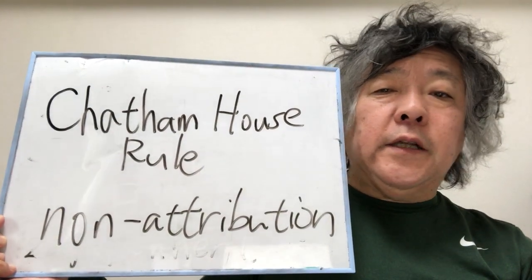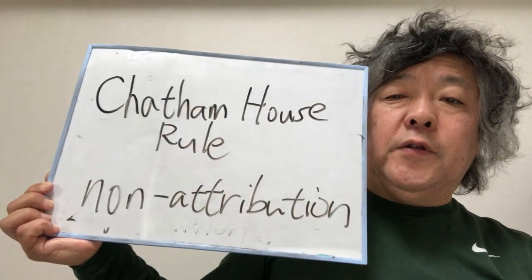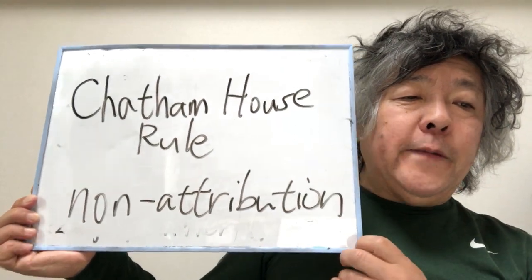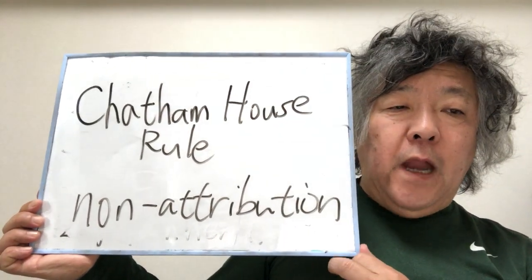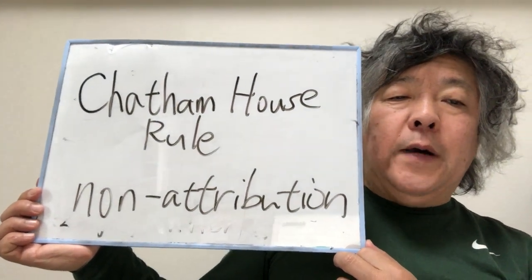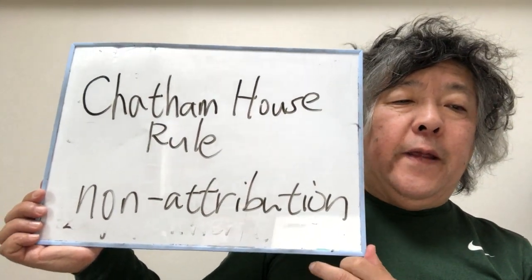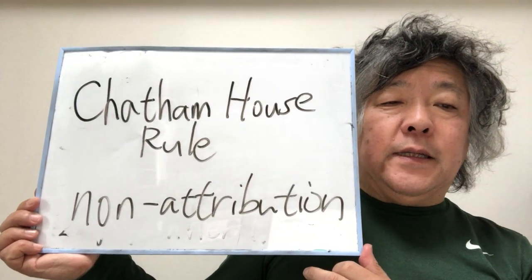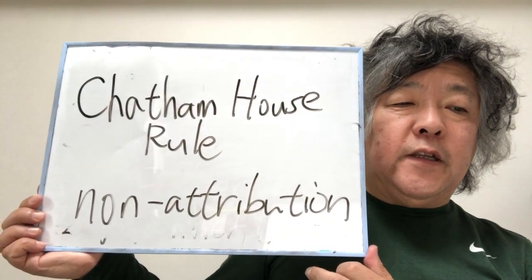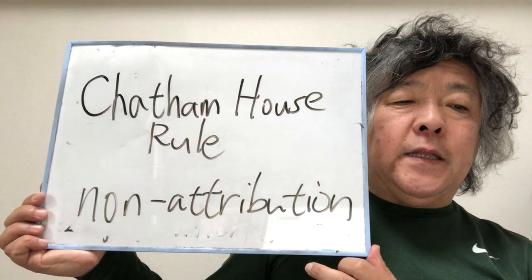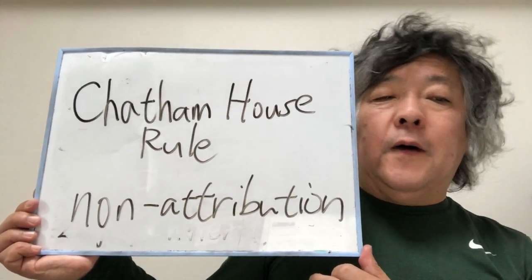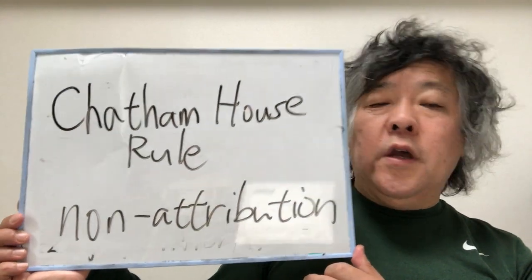The Chatham House rule is a non-attribution rule. It states that when a meeting or part thereof is held under the Chatham House rule, participants are free to use the information received, but neither the identity nor the affiliation of the speakers nor that of any other participants may be revealed. That is the Chatham House rule — a non-attribution rule.